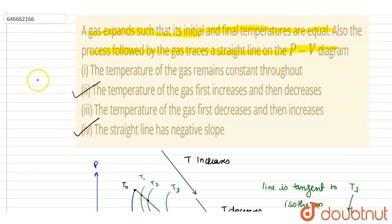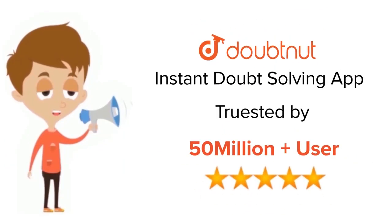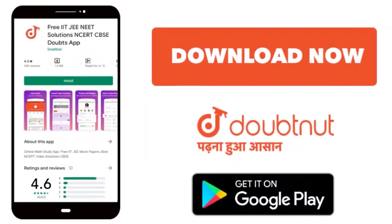So B and D are the correct ones. Thank you. For class 6-12, IIT, JEE and NEET level, trusted by more than 5 crore students, download Doubtnet app today.